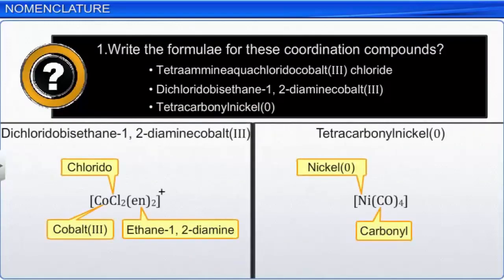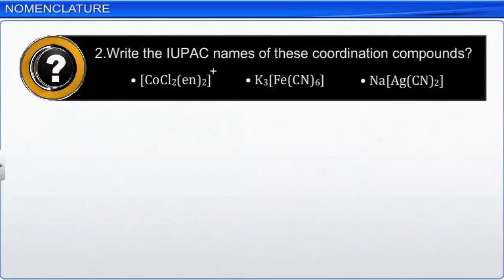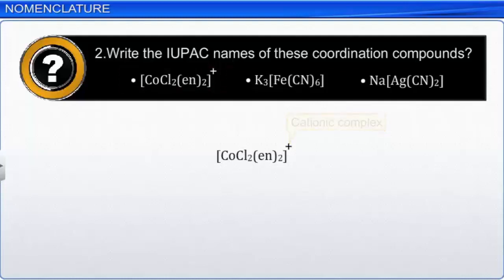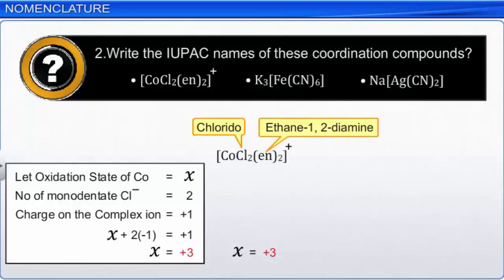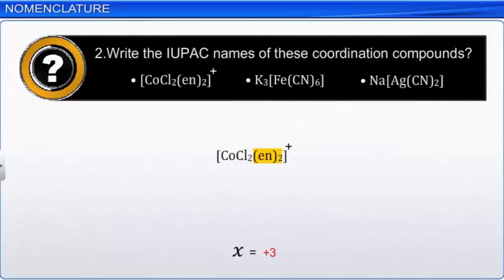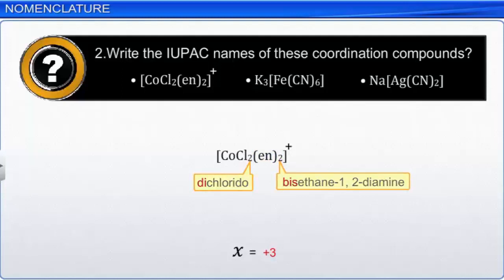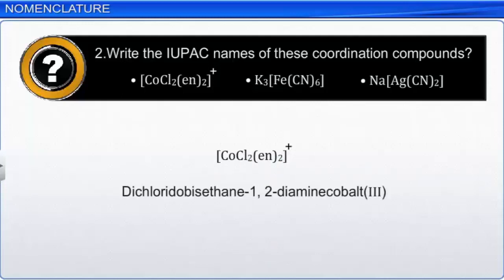For question 2, the first complex is a cationic complex with two chloride ligands and two ethane-1,2-diamine ligands. The oxidation number of cobalt is +3. Following alphabetical order, chlorido ligands are named first, followed by ethane-1,2-diamine. The number of chloride and ethane-1,2-diamine ligands is indicated by the prefixes di- and bis- respectively. Thus, the IUPAC name is dichloridob-is(ethane-1,2-diamine)cobalt(3). The IUPAC names of the other complexes are written similarly.